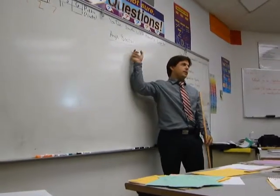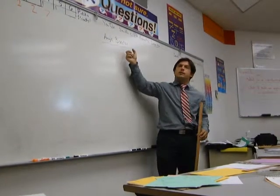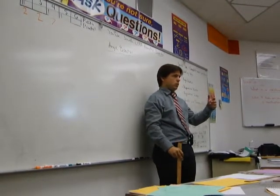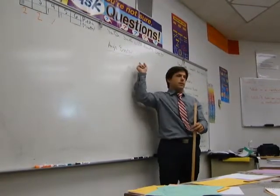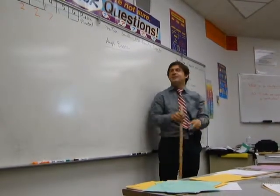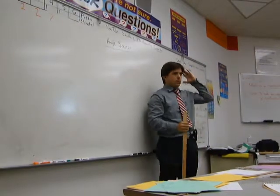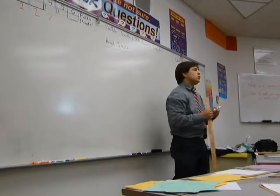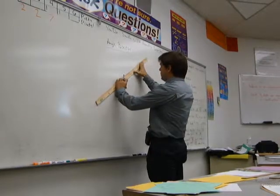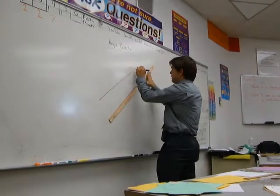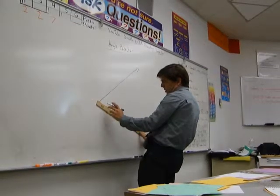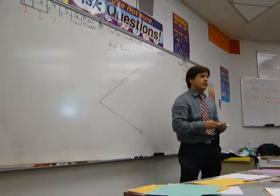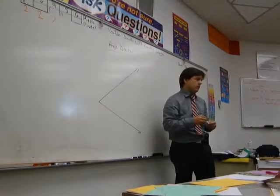We're going to construct an angle bisector — a thing that bisects an angle. What does 'bi' mean? Bi means two. What does 'sect' mean? Sect means divide. So when we bisect something, we're cutting it in half or dividing by two. I'd like you to construct an angle — do not try to imitate mine, it's better if you do your own because then you have to think. Just make an angle; it doesn't much matter what direction it faces or how many degrees it measures.